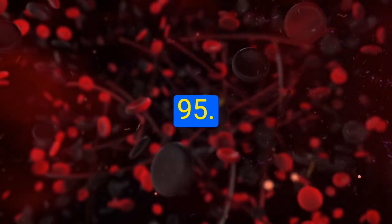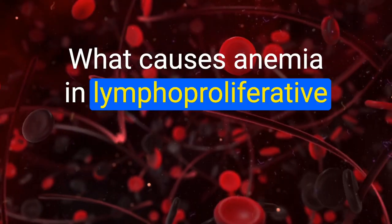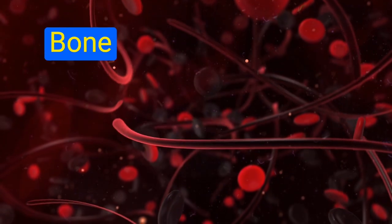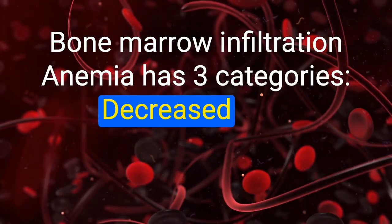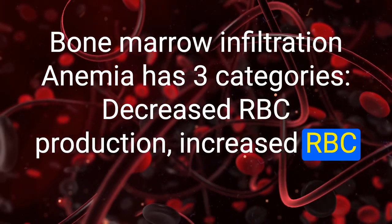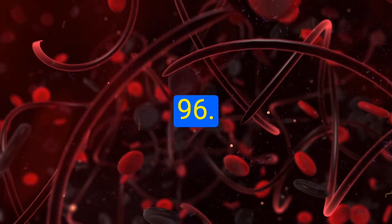What causes anemia in lymphoproliferative disorders such as leukemia and lymphoma? Bone marrow infiltration. Anemia has three categories: decreased RBC production, increased RBC destruction, and blood loss.